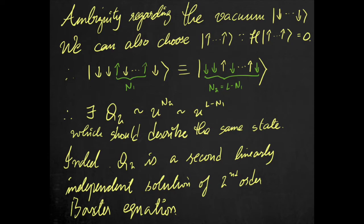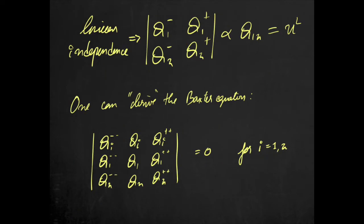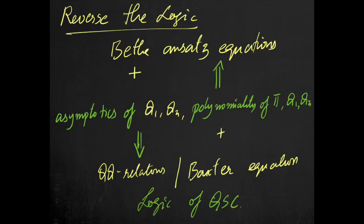Linear independence dictates that the Wronskian of the two solutions is non-zero and we have the following Wronskian relation. In fact, one can derive the Baxter equation starting with a trivial determinant and using this Wronskian relation. Remarkably, one can actually reverse the logic flow. We start with the Wronskian relations, impose the asymptotics and polynomiality of Q1 and Q2, and this is completely equivalent to the Bethe Ansatz equations. This is exactly the logic of the quantum spectral curve. Let's see it at work.